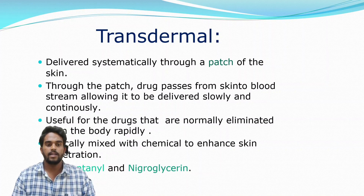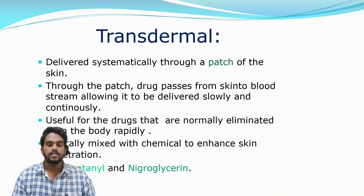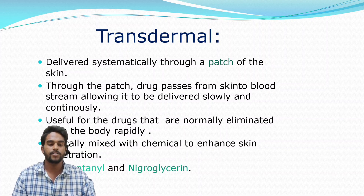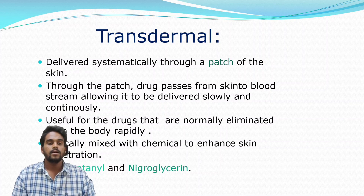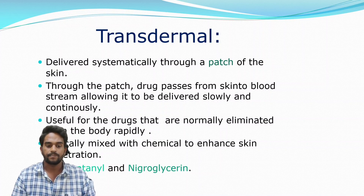Transdermal delivery is administered systemically through a patch on the skin. Through the patch, the drug passes from the skin into the bloodstream, allowing it to be delivered slowly and continuously. This is useful for drugs that are normally eliminated from the body rapidly. The drug is typically mixed with chemicals to enhance skin penetration. Examples are fentanyl and nitroglycerin.